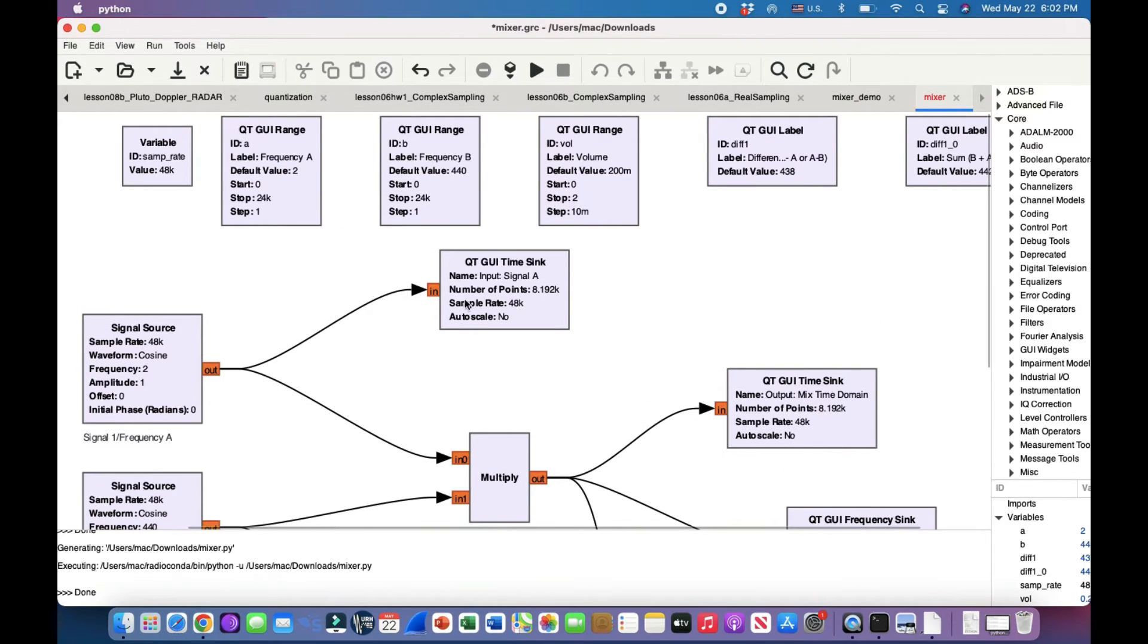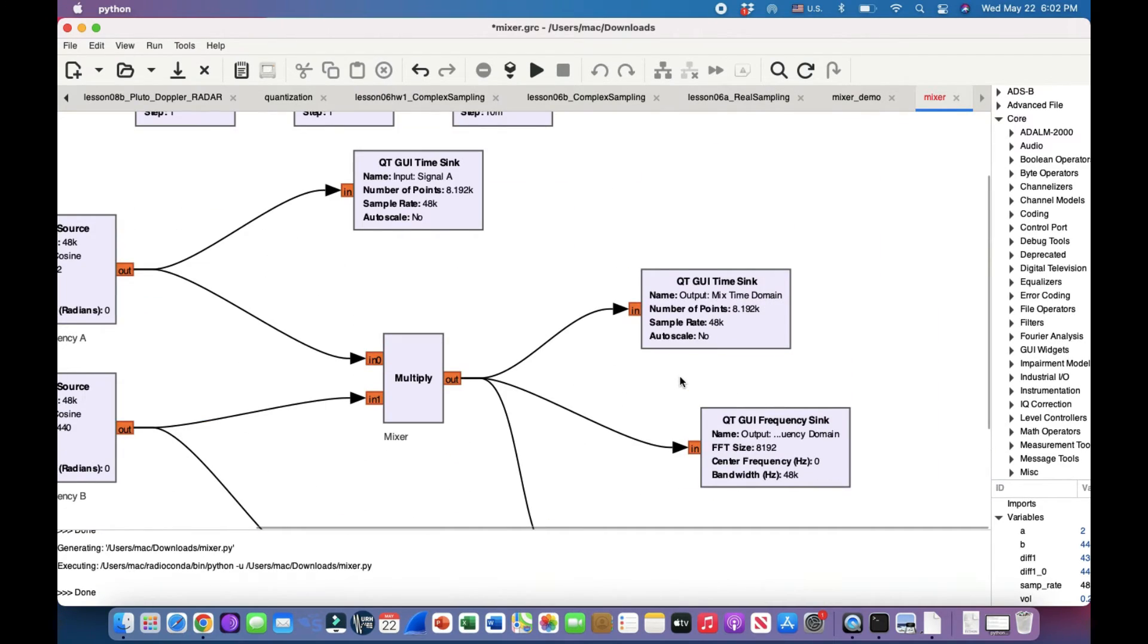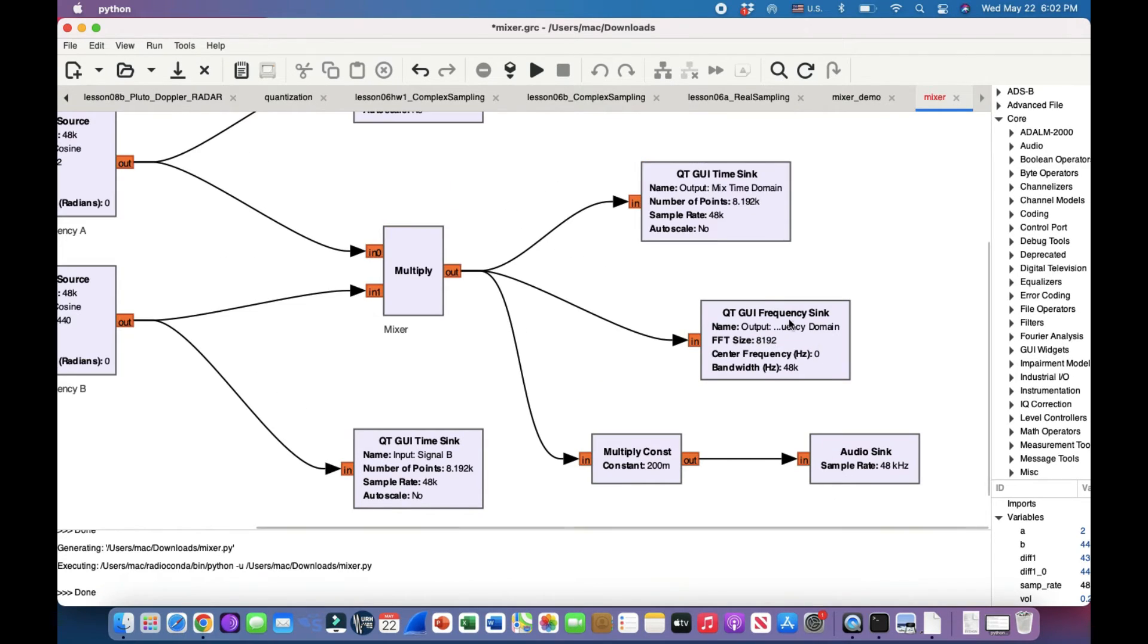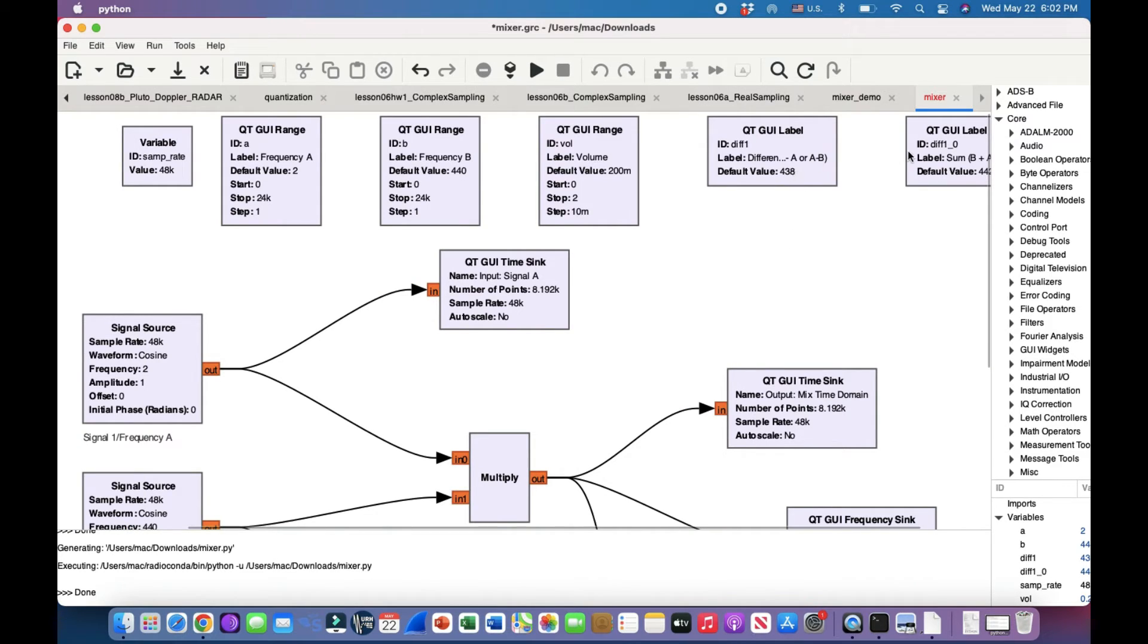So I'm looking at the output of signal frequency A, output of signal frequency B, and once the signal is multiplied together, I'm looking at it in terms of time sink and frequency sink. And then I'm also listening to it as well. So I have a multiply constant block and then I have an audio sink. Basically this is sort of like a volume control so I can hear how the modulated signal sounds like. So that's the basic flowgraph of it.